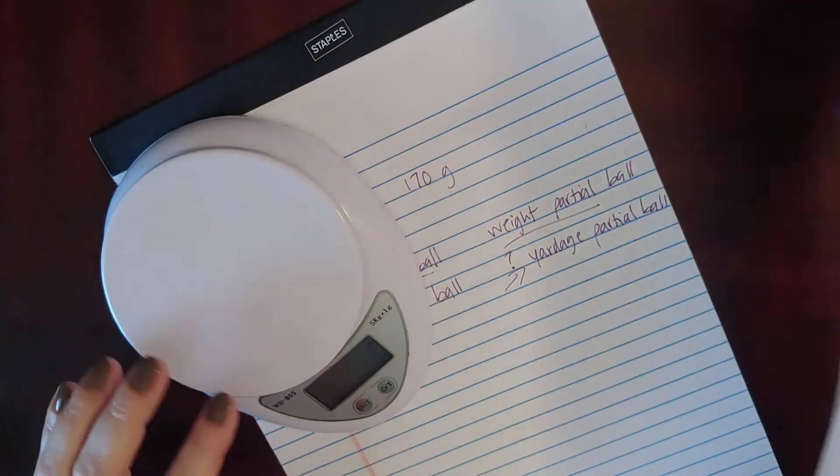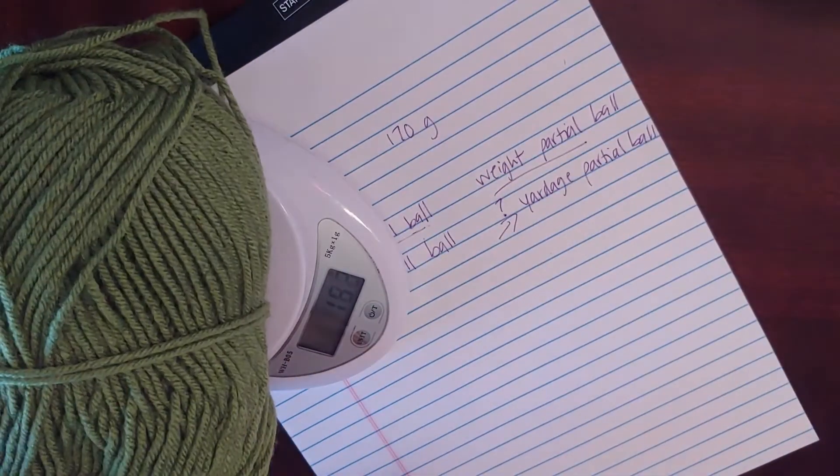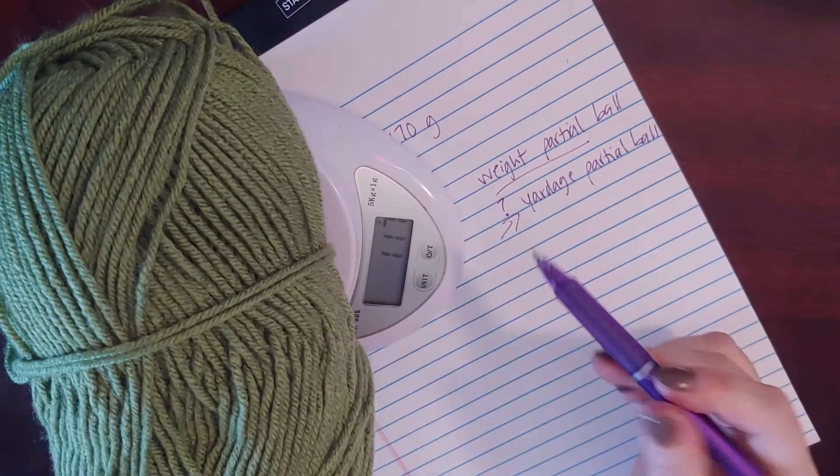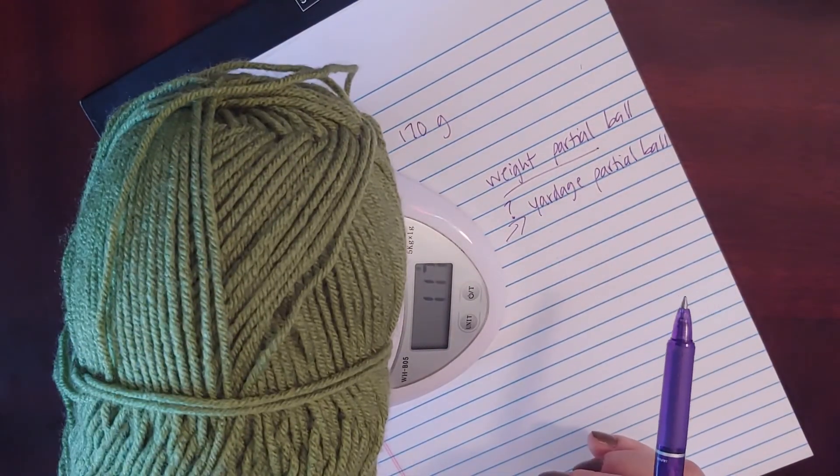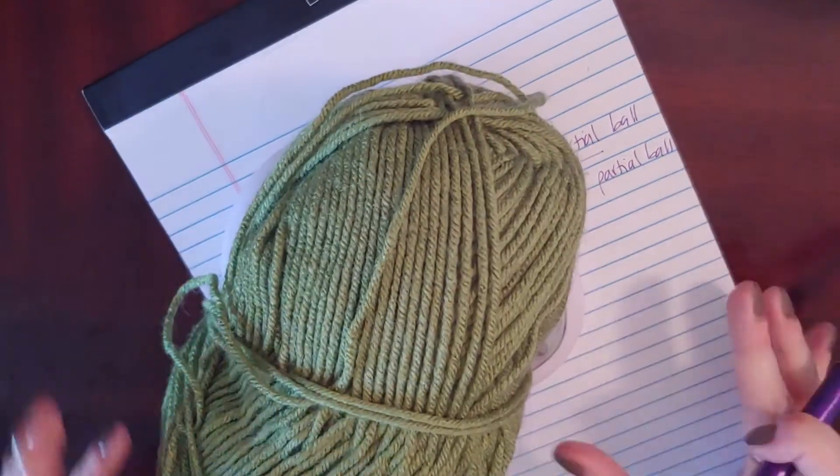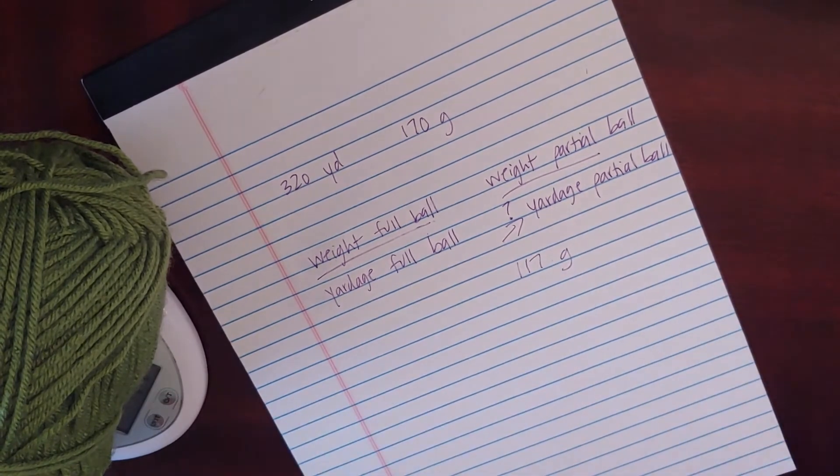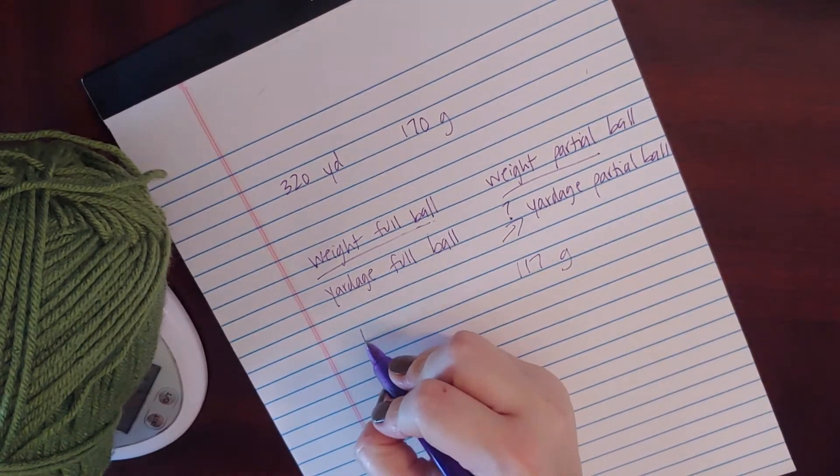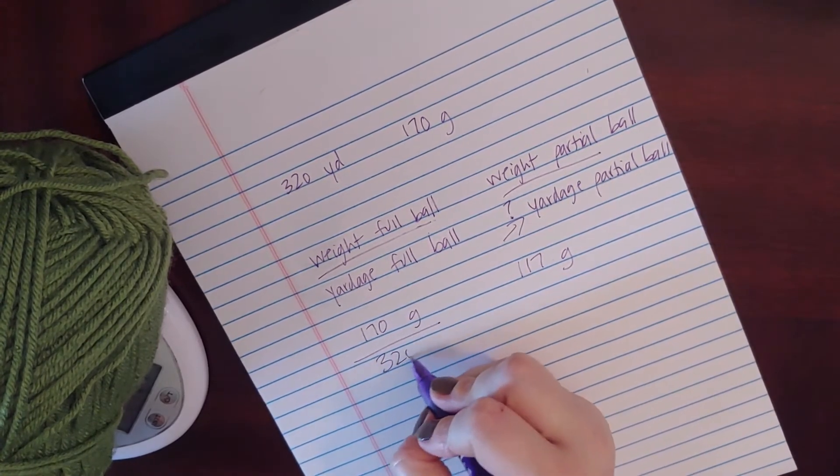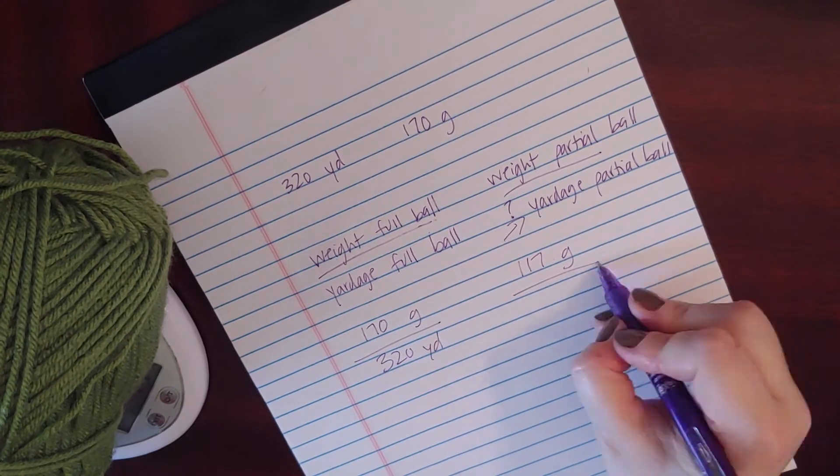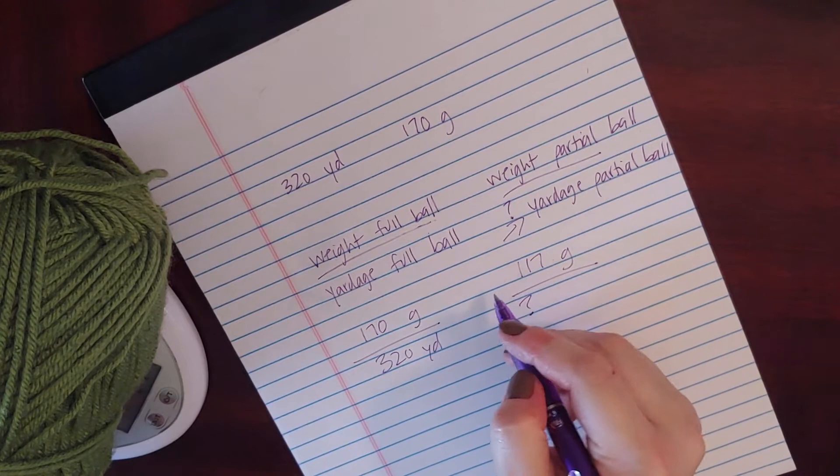First you're going to want to weigh the yarn that you have, and in this case it is 117 grams. I have the weight of the full ball which is 170 grams. I have the yardage of the full ball which is 320 yards. And then the information I don't have is the yardage of the partial ball. So it's a two-step math problem.